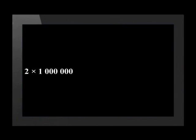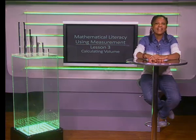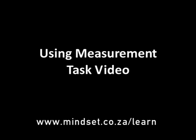Using this knowledge, let's convert two cubic metres to cubic centimetres. Two times one million equals two million cubic centimetres. Remember to look at the tasks for this section in the Using Measurement Tasks video. You'll also be able to learn more about measurement on our website www.mindset.co.za/learn. Goodbye.